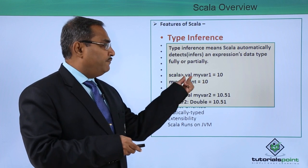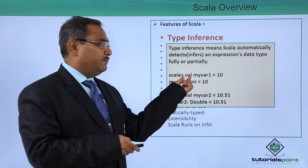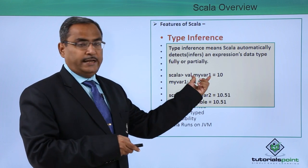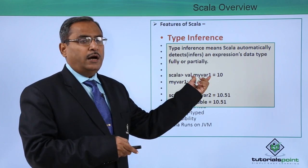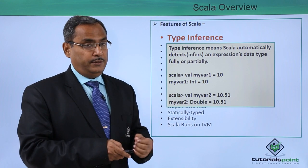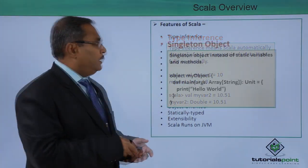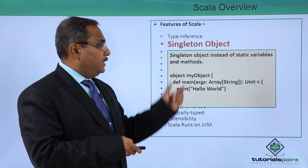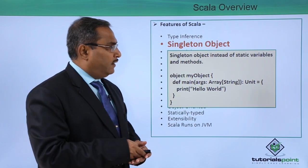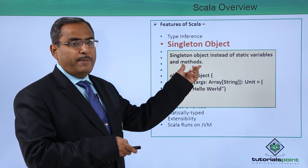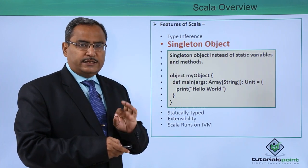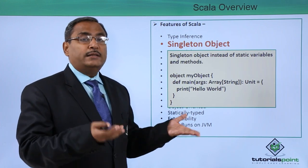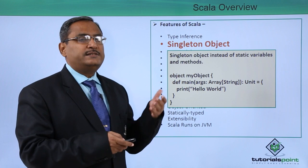When we define a variable using 'val', it becomes an immutable variable, meaning its value cannot be changed. The next property is singleton object — used instead of static variables and methods. In Scala, there is no keyword called 'static', so using a singleton object we can simulate the static environment.